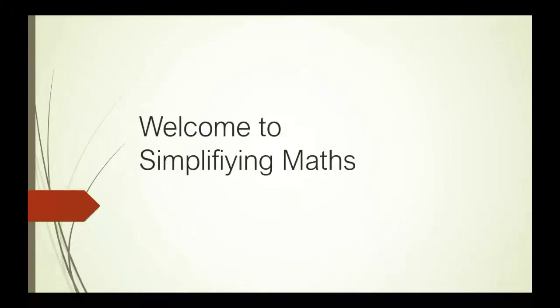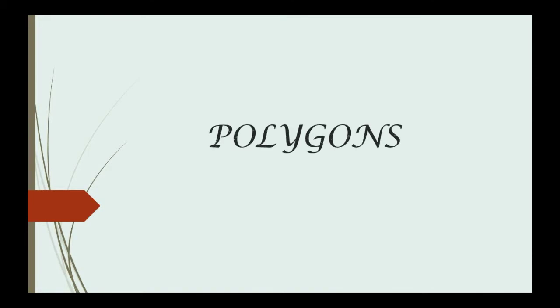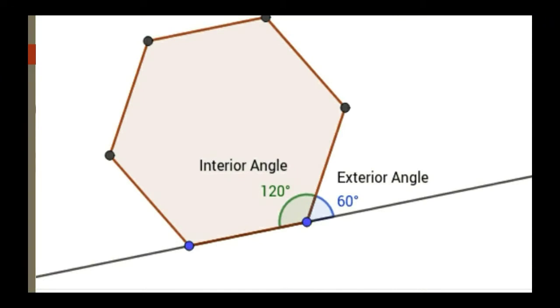Hi friends, welcome to Simplifying Maths. Today's topic is formulas on polygons. We are going to deal with formulas about interior and exterior angles of a polygon. This is a polygon — this is the interior angle, and this is the exterior angle.